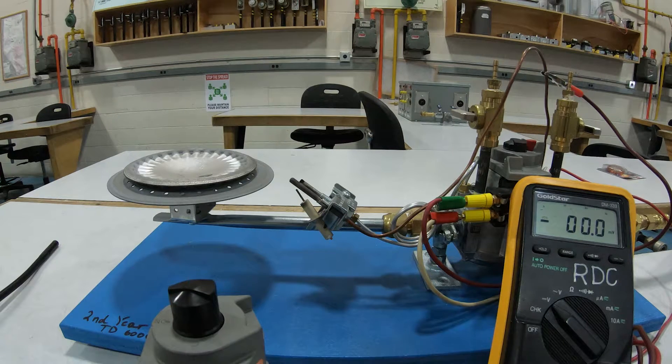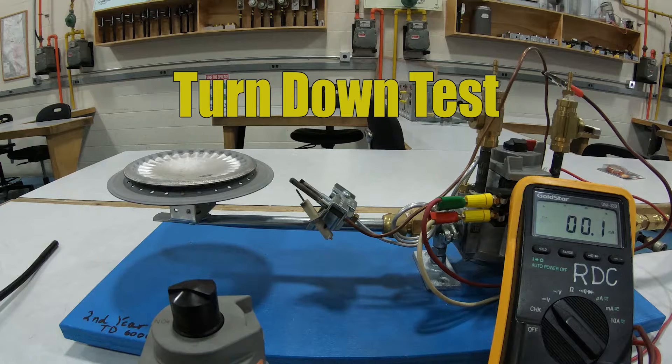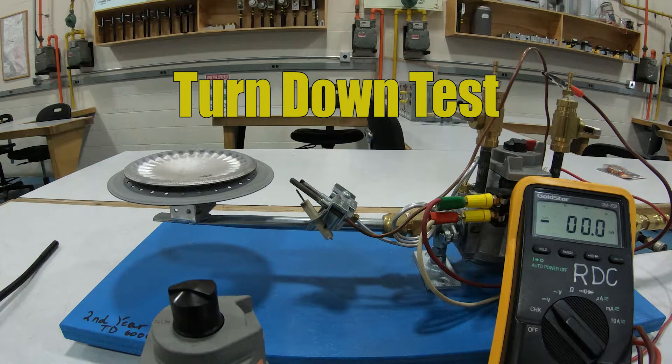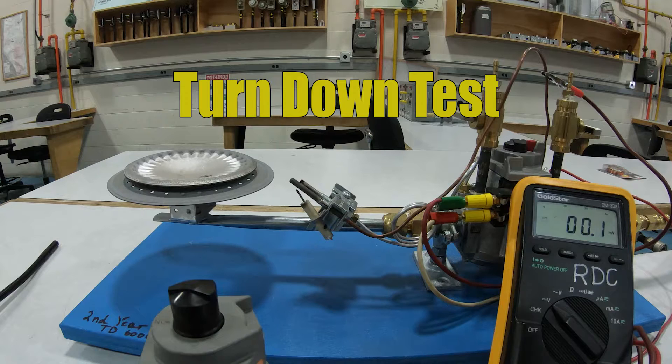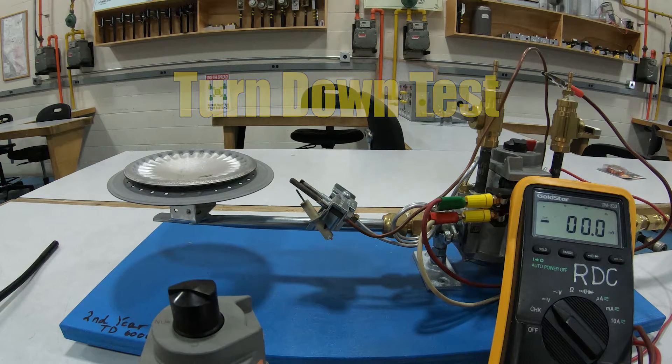All right, the next test. This one is a little tricky to do. We call this the turndown test. What we're going to try to do is light up the pilot light and we're going to try to get the pilot flame as small as possible.